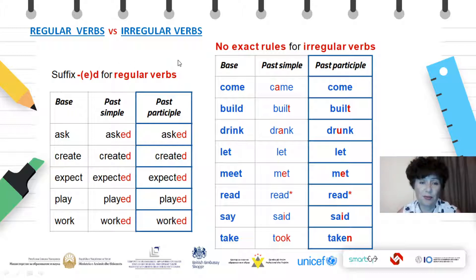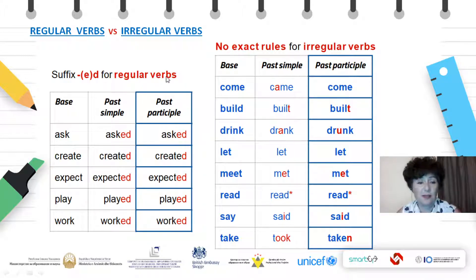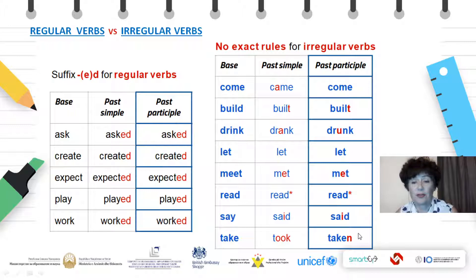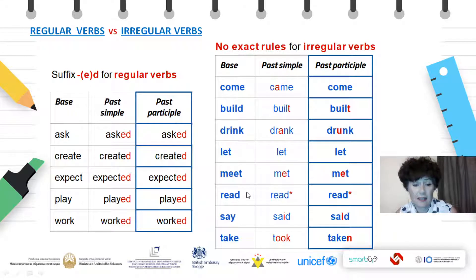This is what you were supposed to notice. As you see here in the left table with the regular verbs, the suffix -ED is used in regular verbs, and the past simple form is exactly the same as the past participle form. But when we think about the irregular verbs, the situation is completely different. You see, the red letters show you where changes happen. In some verbs, there are no changes at all in all three forms.